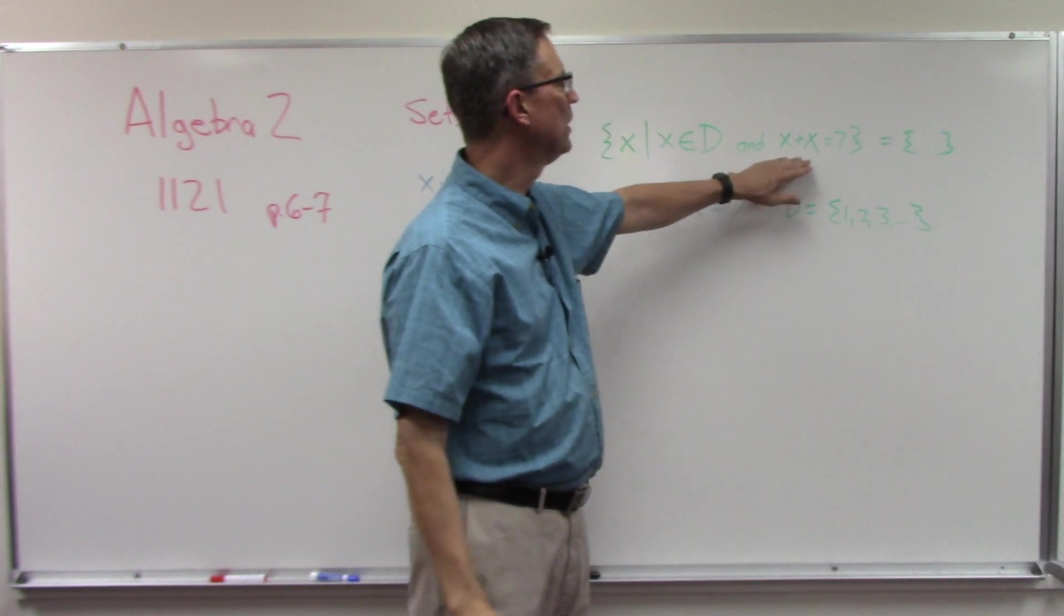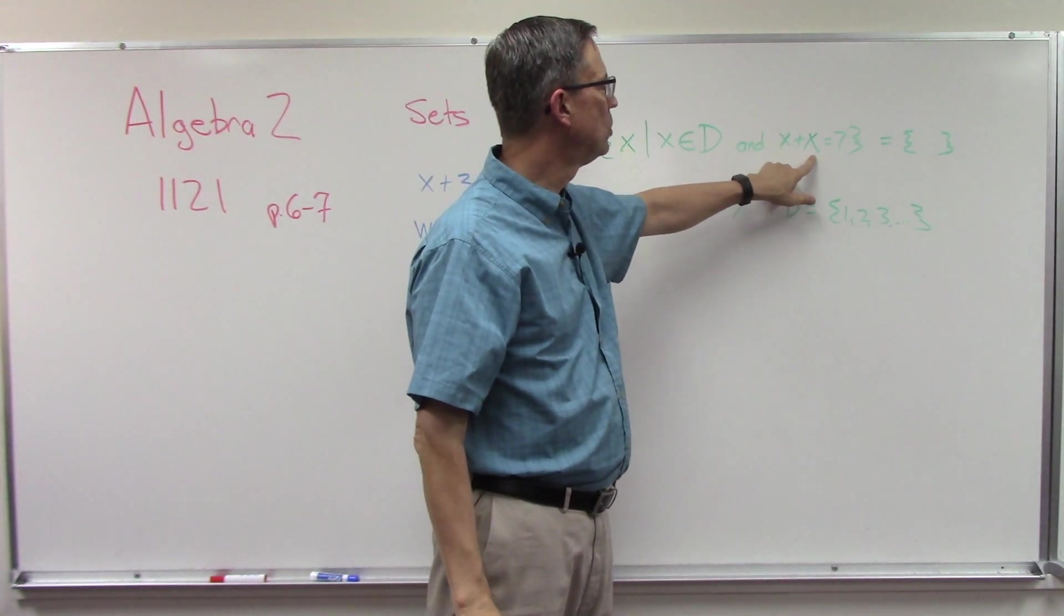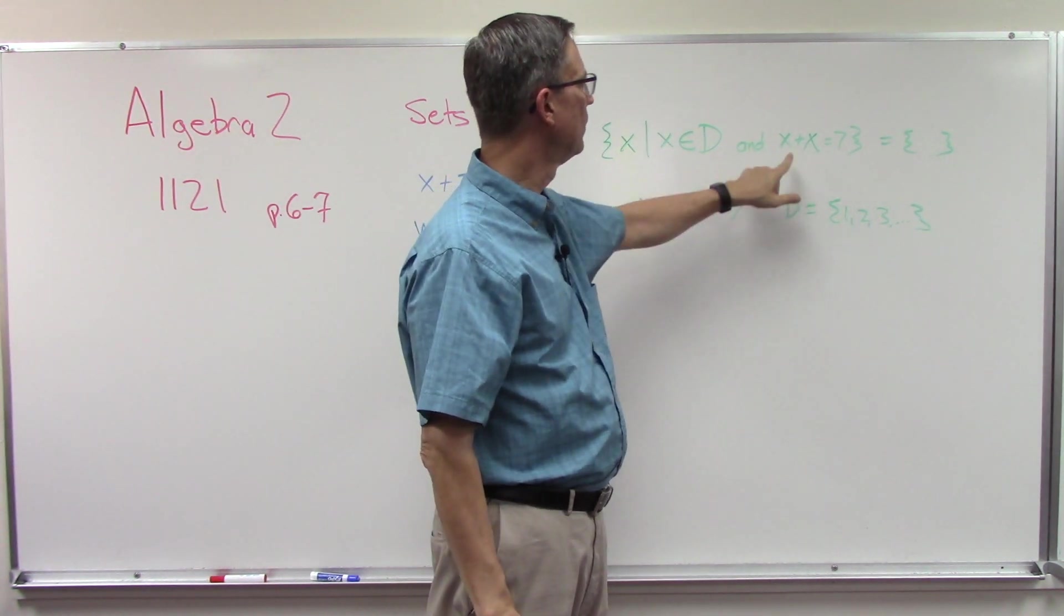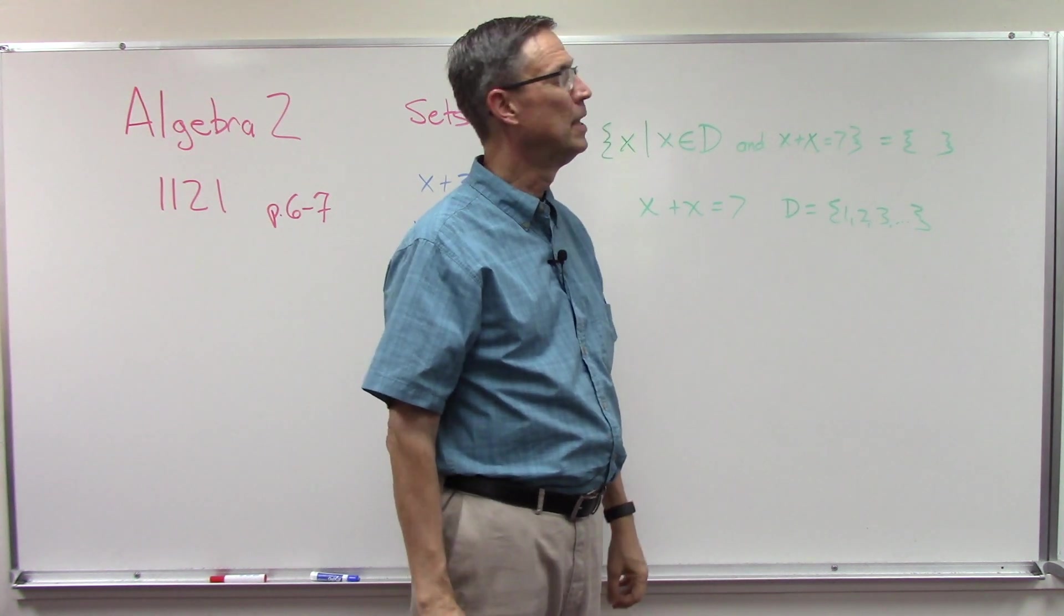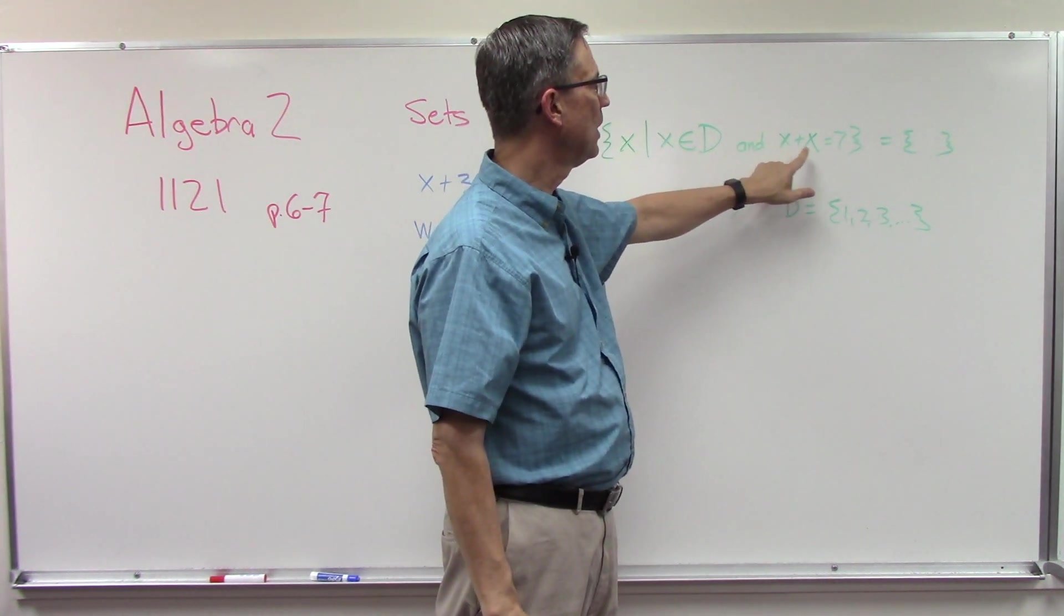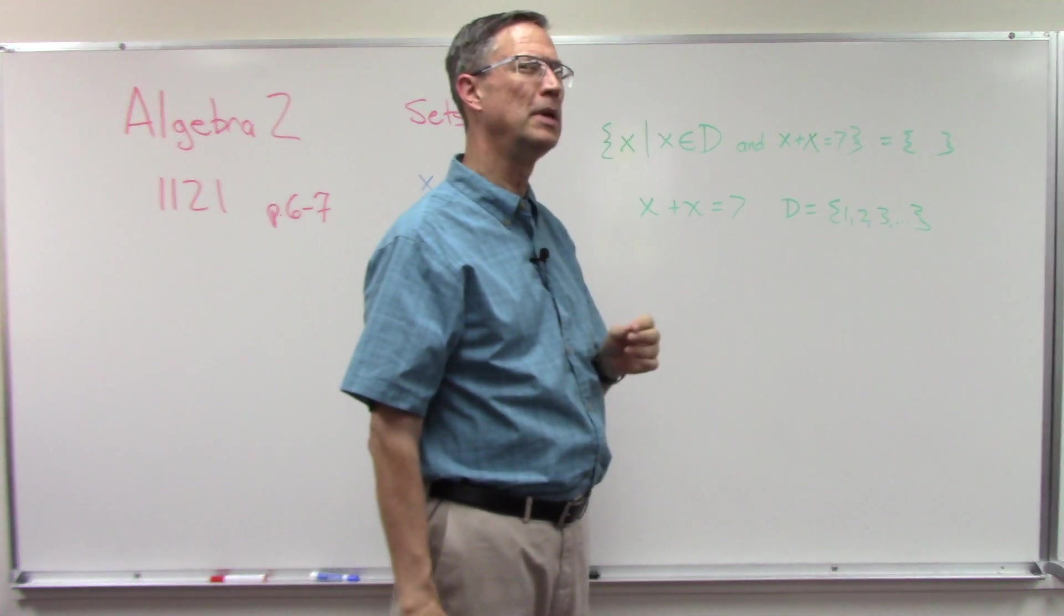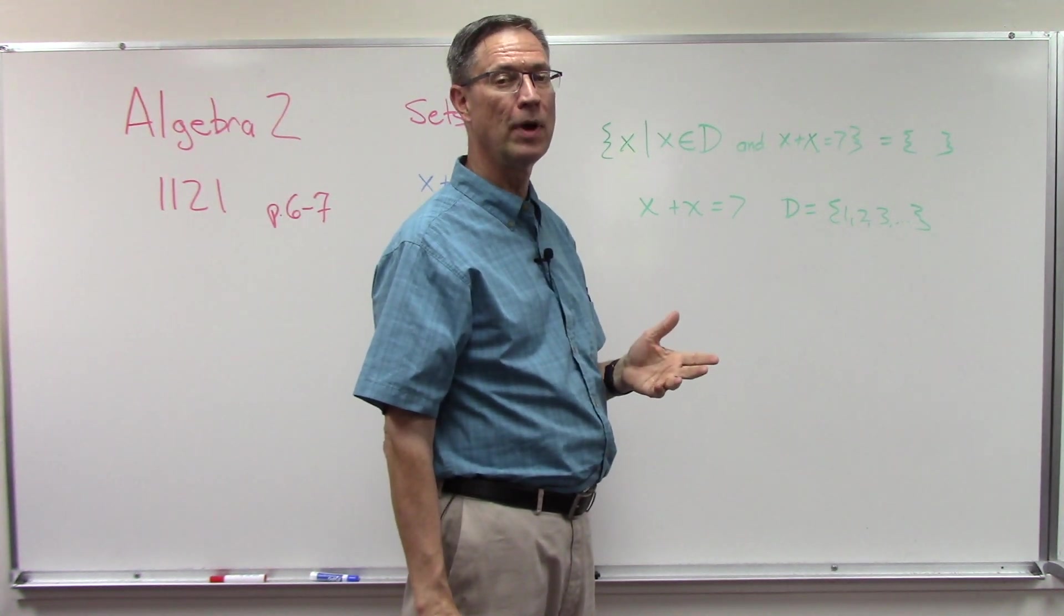So we're going to first say x is an element, but now we're going to say D. So you'll put the set D up here and we'll replace this with x plus x equals seven. Now when you see, and there's like four of them on your homework here on page seven, when you see two x's that means they have to have the same value.